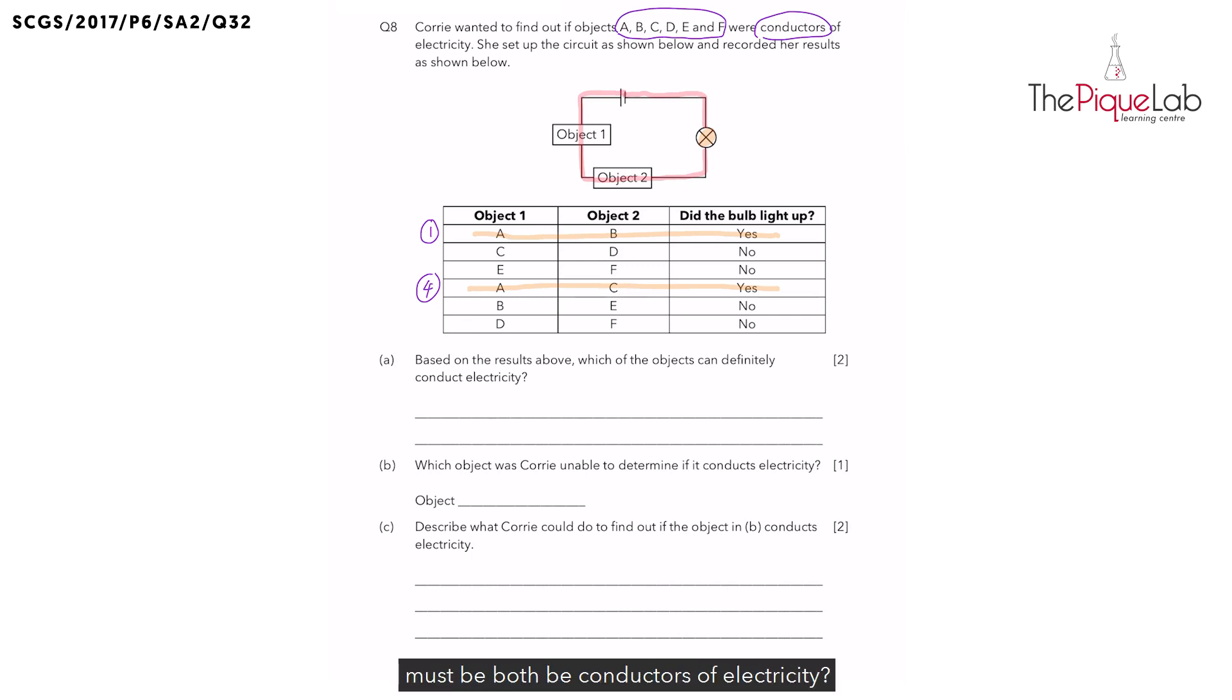must they both be conductors of electricity? Yes, they both must be conductors of electricity, allowing electricity to flow through the circuit. Now just by looking at lines one and four, let's write down our confirmed conductors of electricity. We have objects A, B and C.